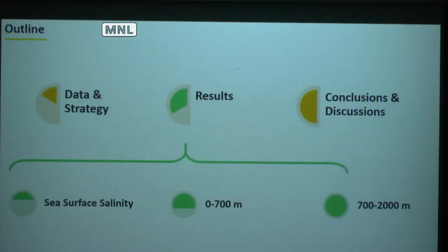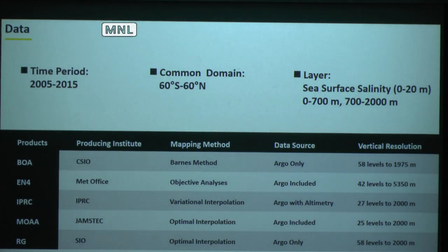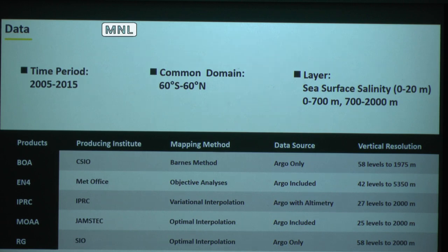Here's our outline. We're going to start with the data. Of all the dozens we just saw, only five are actually updated regularly. They all have a monthly resolution: BOA and EN4 from Met Office, IPRC, MOA from Japan, and RG from Scripps. They have different methods that will cause some problems, which we're going to talk about later.